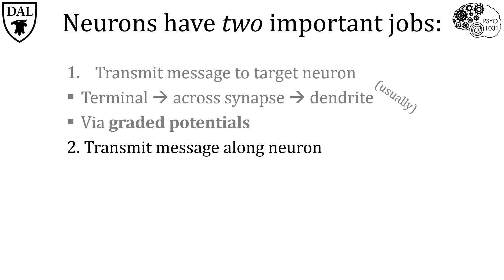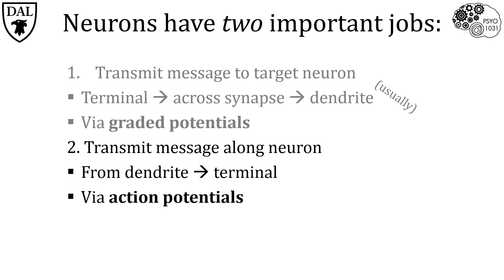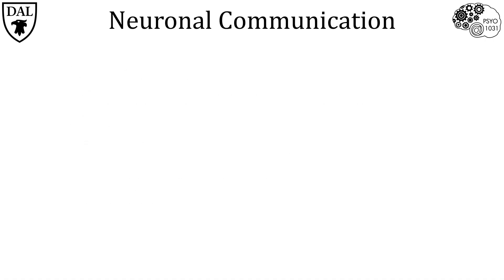The second important job of neurons, after receiving a message, is to transmit that message along its length from its dendrites to its axon terminals. This happens via a type of electrical signal called an action potential. Our neurons are talking to each other all the time, by the millions and millions — try and picture that, it's mind-boggling.